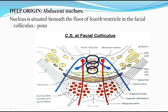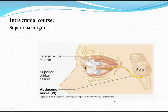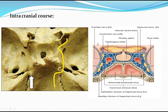After emerging out at the pontomedullary junction - at the junction between the lower pons and the pyramid of the medulla - the nerve travels forward. This is the superficial origin. The intracranial course of the abducent nerve first travels forwards and downwards, reaches just behind the dorsum sellae of the sphenoid bone, then takes a lateral turn.